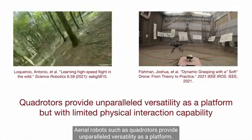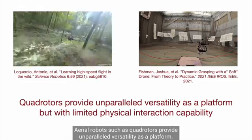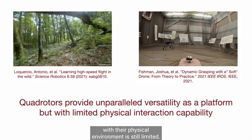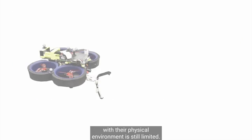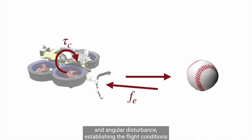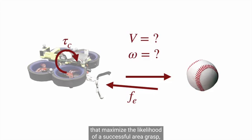Aerial robots such as quadrotors provide unparalleled versatility as a platform. However, quadrotors' interaction with their physical environment is still limited. In the case of aerial grasping, the grasping drone must be capable of compensating for significant linear and angular disturbance, establishing the flight conditions that maximize the likelihood of a successful aerial grasp, which is essential to informing drone control strategies.